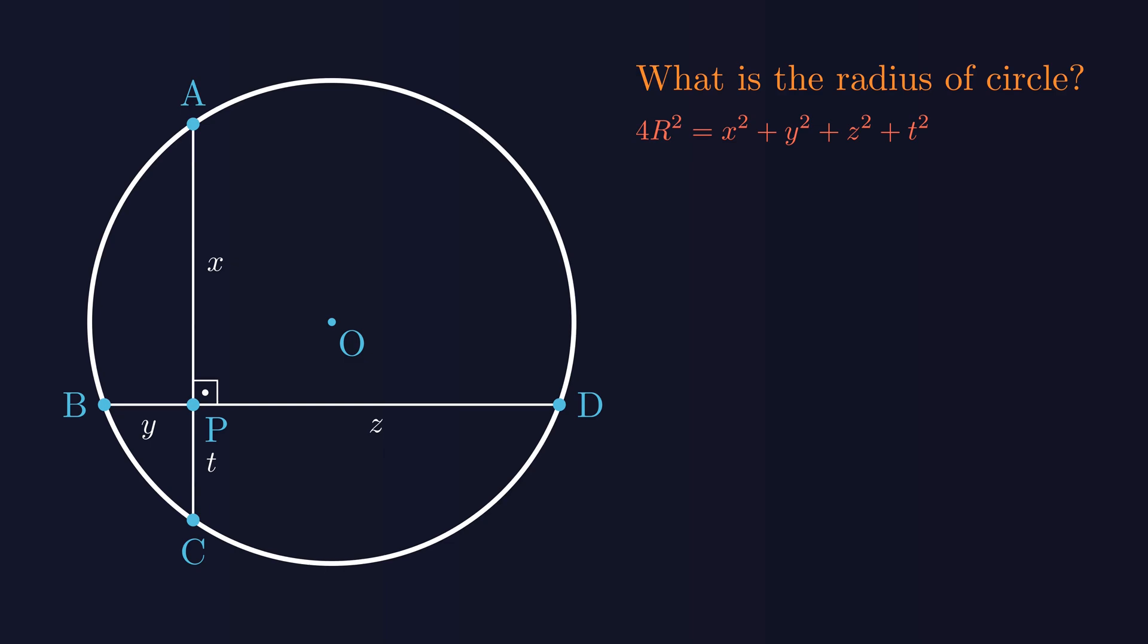So let's get started. Here's a very important piece of information. A perpendicular drawn from the center of a circle to a chord always bisects the chord. So if the length of chord BD is y plus z, then the right side becomes y plus z over 2. And the other small piece becomes z minus y over 2. Similarly, if we drop a perpendicular from the center to chord AC, the upper part becomes x plus t over 2.